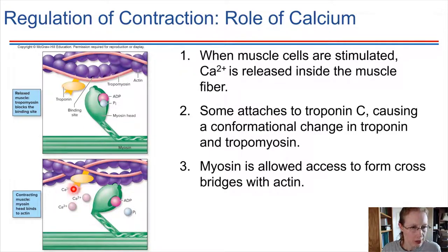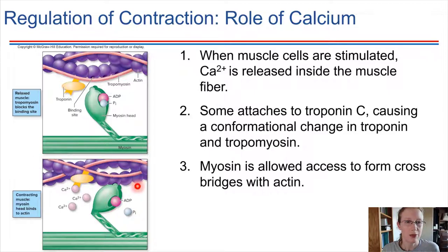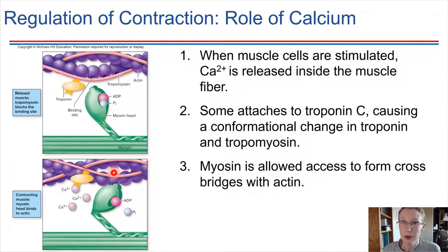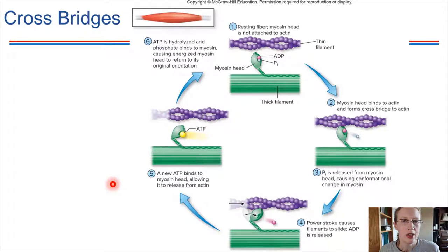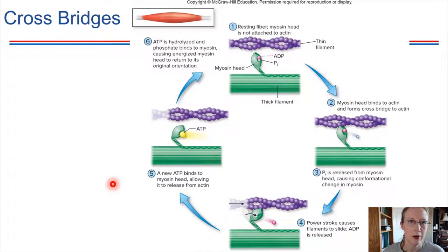When calcium is present, calcium causes troponin to move, which in turn pulls tropomyosin with it and exposes the binding site for myosin. So now the myosin head group can bind to actin, and then a contraction can take place. Once this binding takes place, this is called a cross bridge — a cross bridge has been formed between the thick and thin filaments inside of the muscle cell.